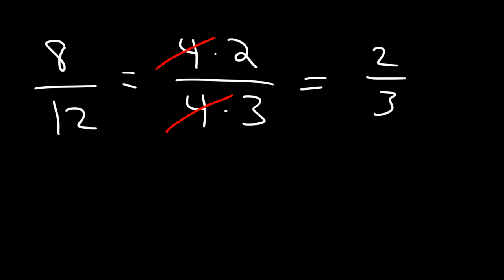Another way in which you can do that problem is you could realize that 8 is basically 4 times 2, and 12 is 4 times 3. And so you can cancel 4, and then this will give you the final result of 2 over 3.